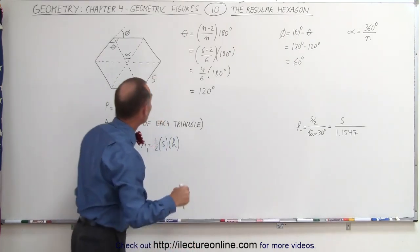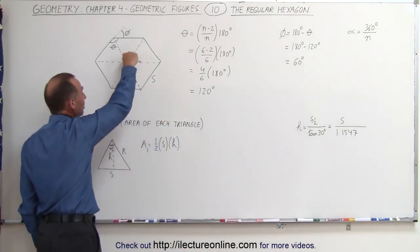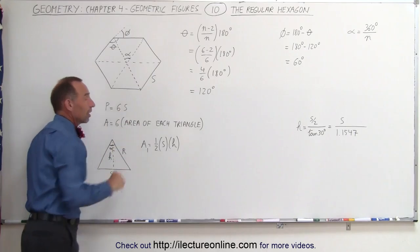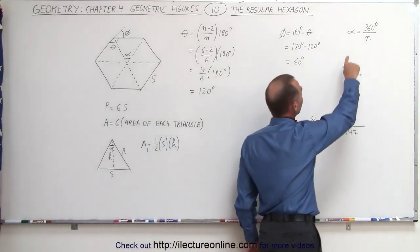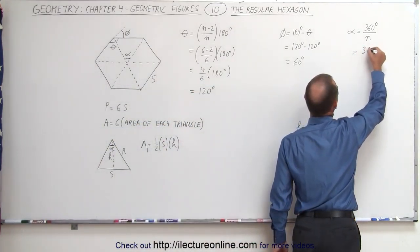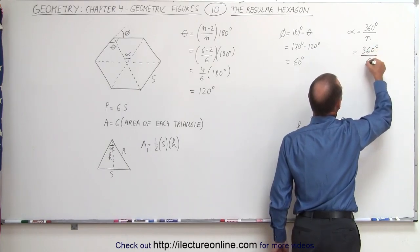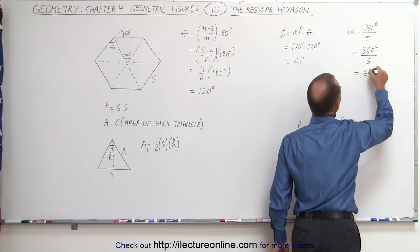And again, to find that angle, realize that there are six triangles, and if you go all the way around the circle, that's equal to 360 degrees. The angle alpha can be found by taking 360 degrees divided by 6, which is indeed 60 degrees.